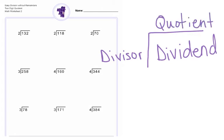And if the dividend cannot be divided exactly evenly by the divisor, then your quotient is also going to have a remainder. And you write that as R and then whatever is left over. That's the biggest thing I want you to remember, and it's going to be something that you're going to use on your test on Friday.